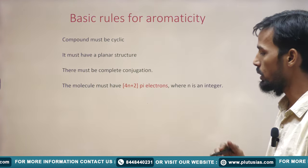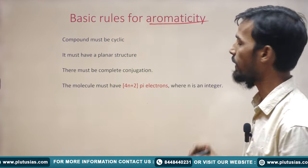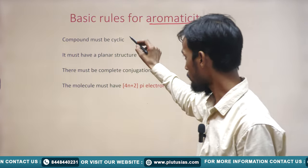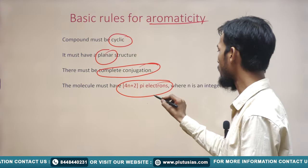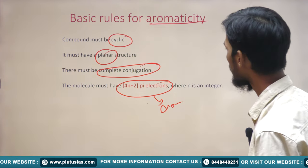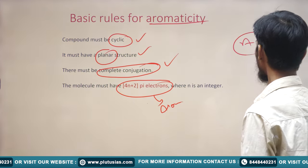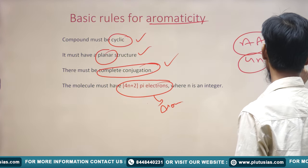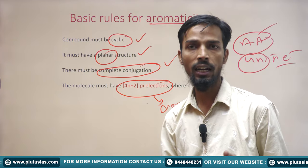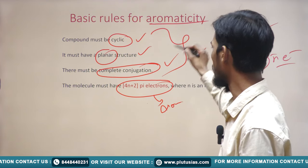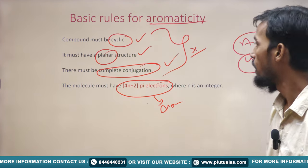Before coming to the question-solving part, we will discuss a bit about aromaticity. As we know, for any compound to be aromatic it must fulfill these conditions: it must be cyclic, planar, have complete conjugation, and have 4n+2 π electrons. For any compound to be anti-aromatic, the first three conditions are the same, but it must follow 4n π electrons. For a non-aromatic compound, any of these four conditions must not be fulfilled — such compounds are known as non-aromatic compounds.